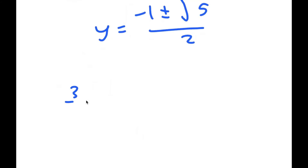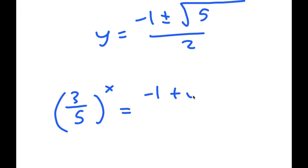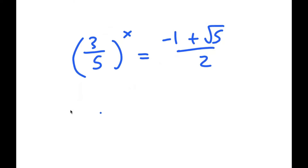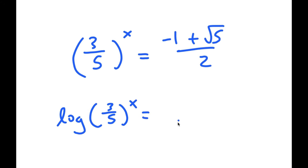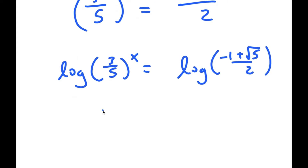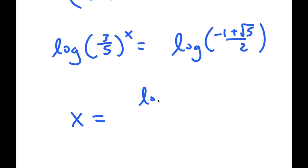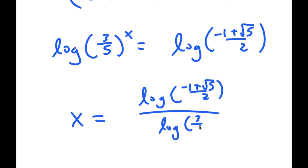Meaning I have 3 over 5 to the power of x is equal to negative 1 plus the square root of 5 over 2. The reason why negative 1 minus the square root of 5 over 2 doesn't work is because that's negative, and you can't take the power of a positive number and make it equal negative. So from here, if I take the log on both sides, I get x is equal to log of negative 1 plus the square root of 5 over 2, divided by log of 3 over 5. So this is my solution.